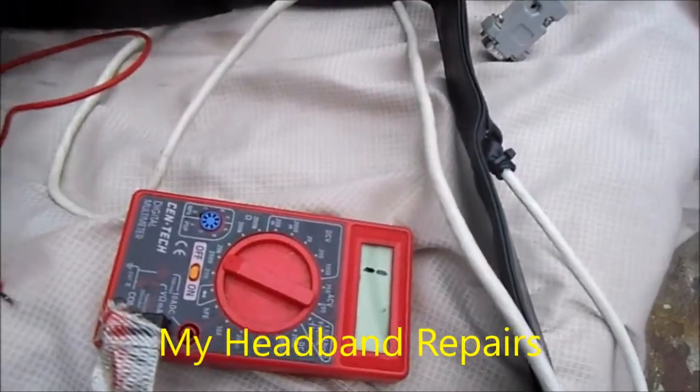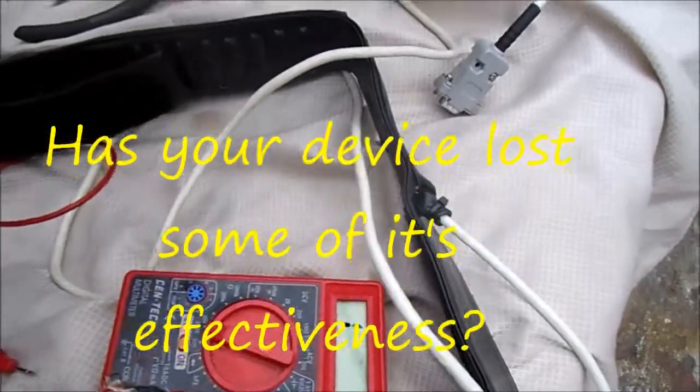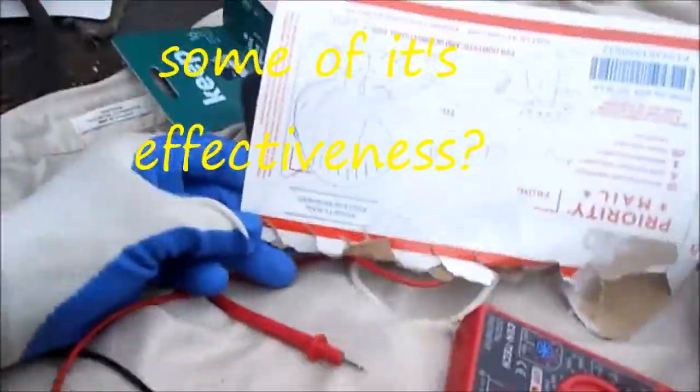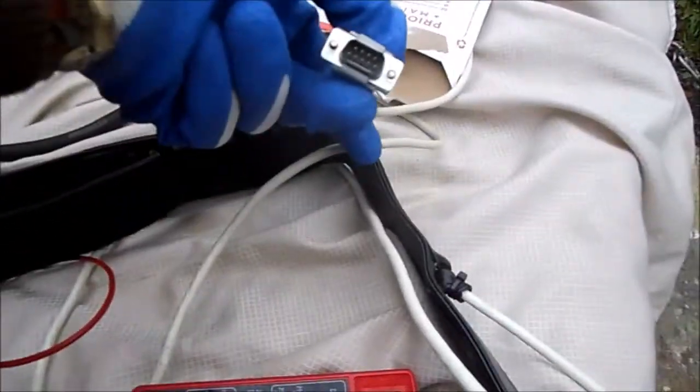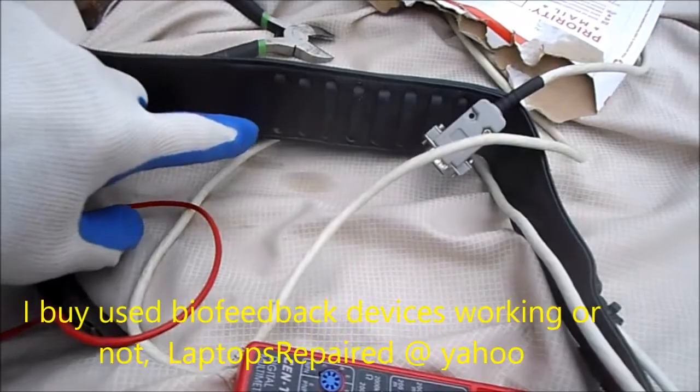You can see that what I did, I was taking some readings off of it with my meter here, and I found that there were two shorted lines. So basically, two of these terminals went to one electrode.